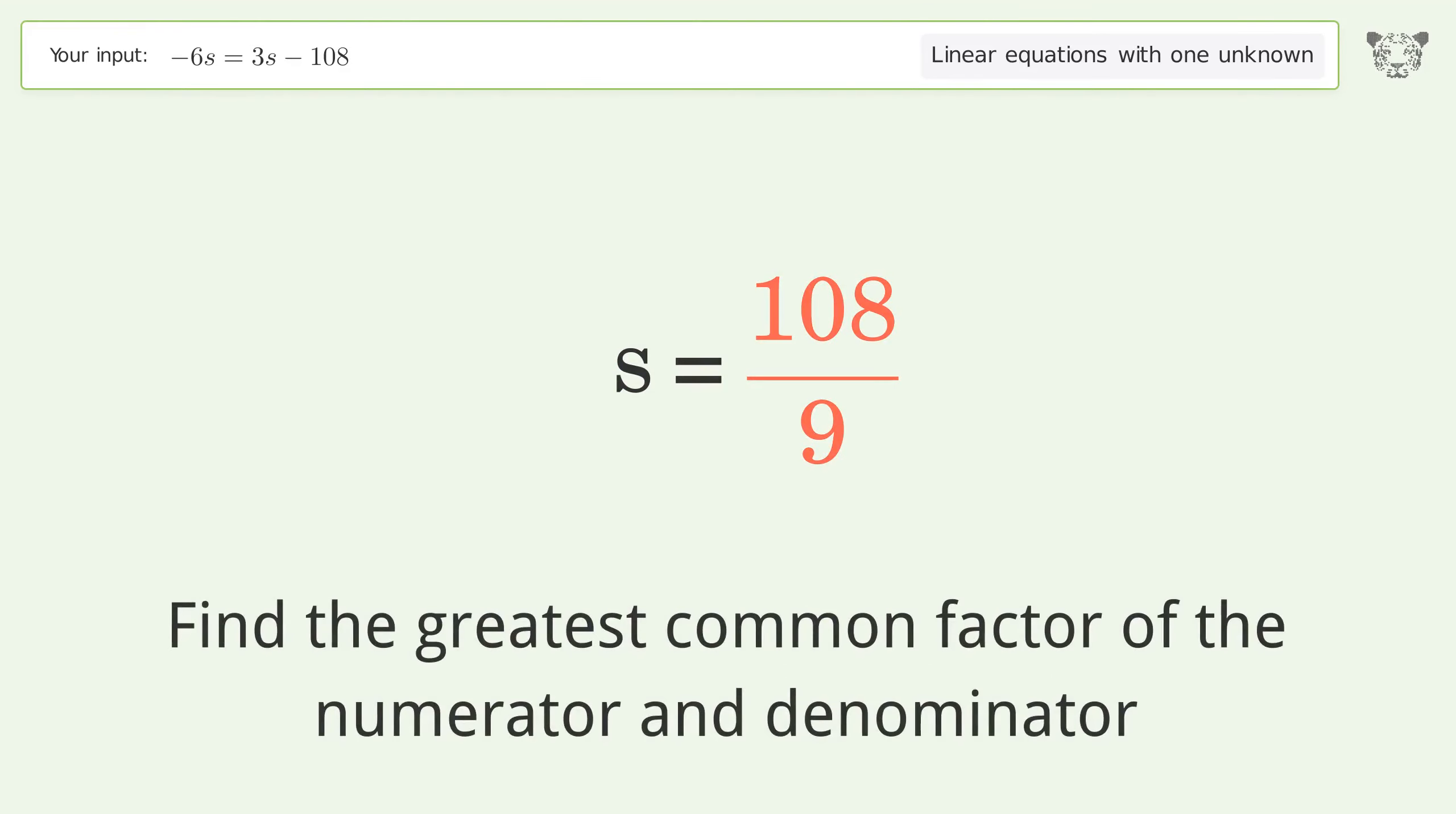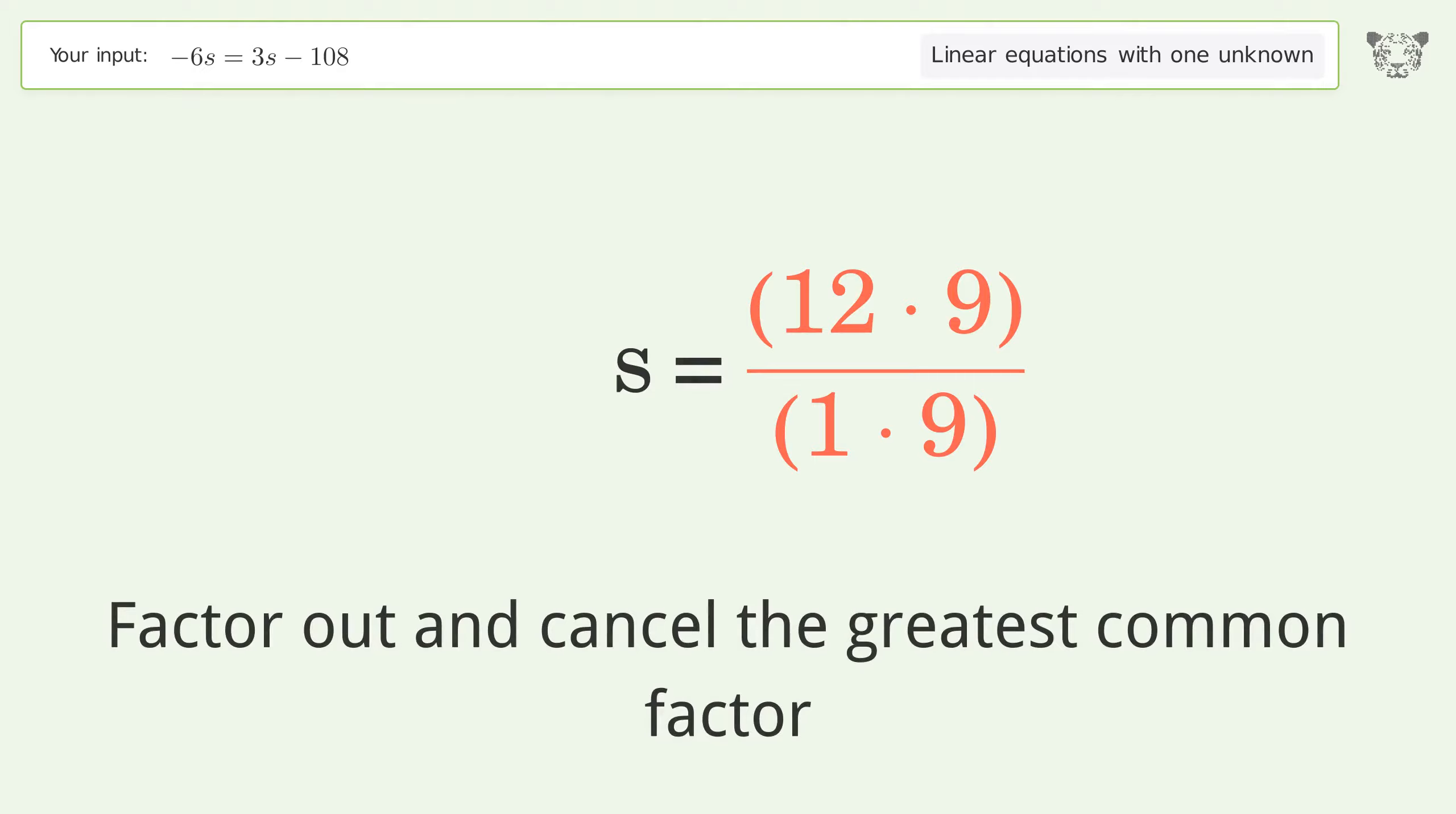Find the greatest common factor of the numerator and denominator. Factor out and cancel the greatest common factor.